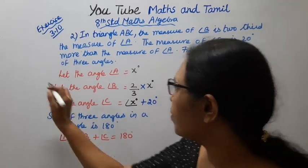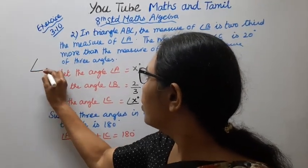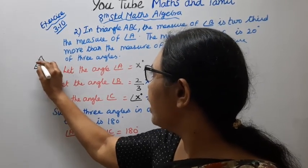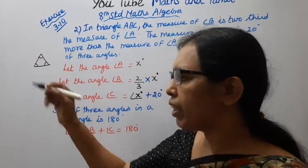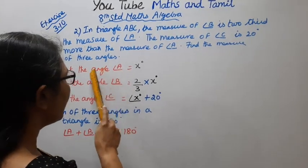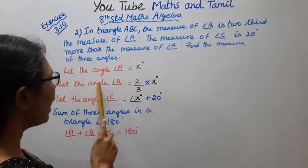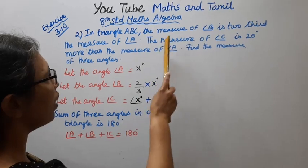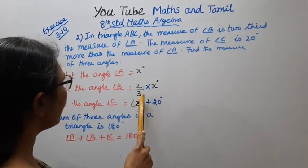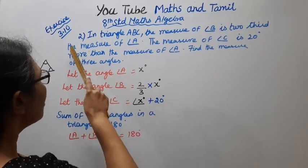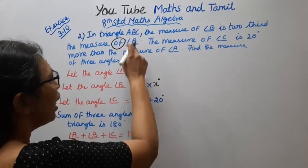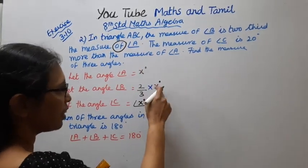One triangle is there with angle A, angle B, angle C. Now, let angle A equal X degrees. Let angle B equal 2/3 of angle A, so angle B is 2/3 into X degrees.